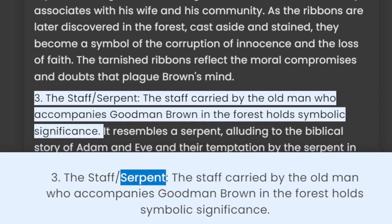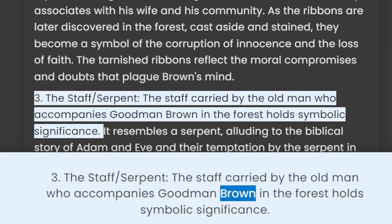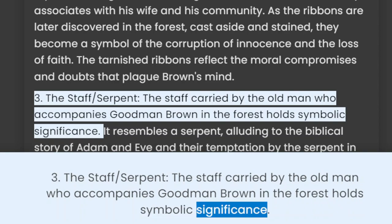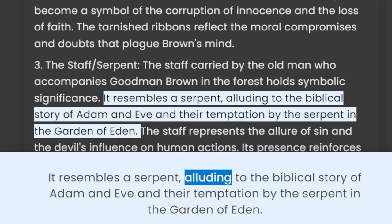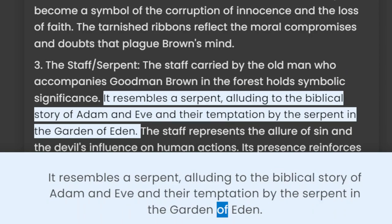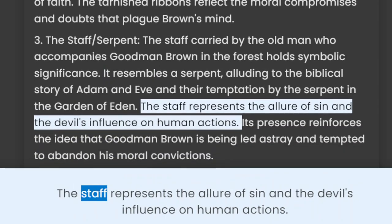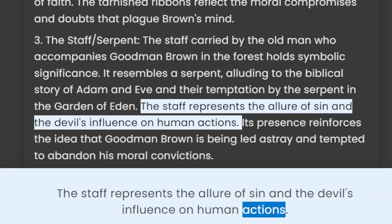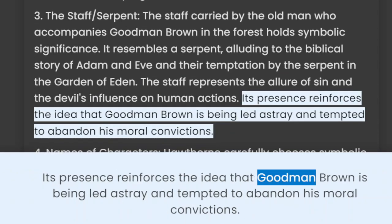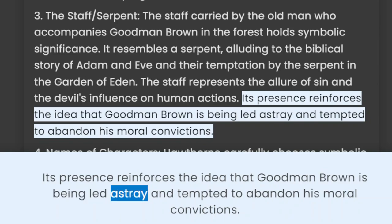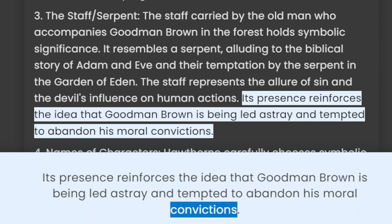3. The Staff Serpent. The staff carried by the old man who accompanies Goodman Brown in the forest holds symbolic significance. It resembles a serpent, alluding to the biblical story of Adam and Eve and their temptation by the serpent in the Garden of Eden. The staff represents the allure of sin and the devil's influence on human actions. Its presence reinforces the idea that Goodman Brown is being led astray and tempted to abandon his moral convictions.